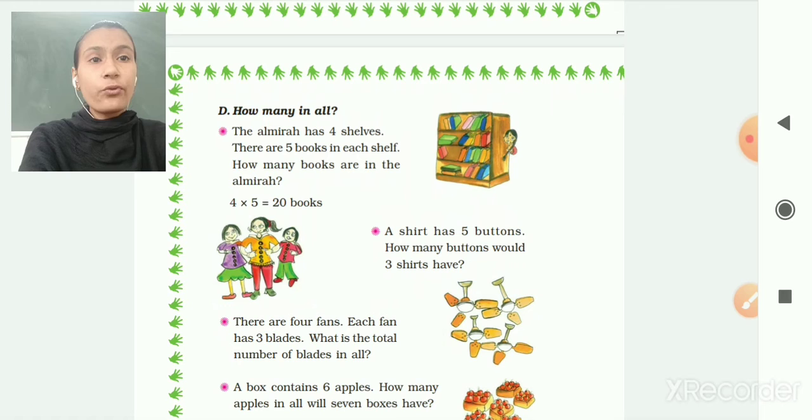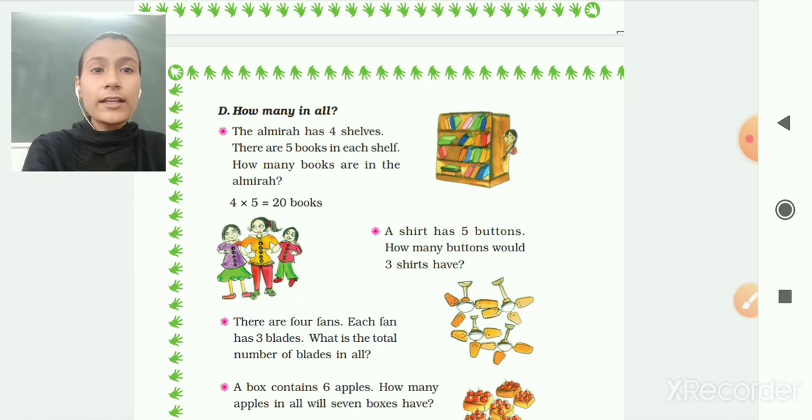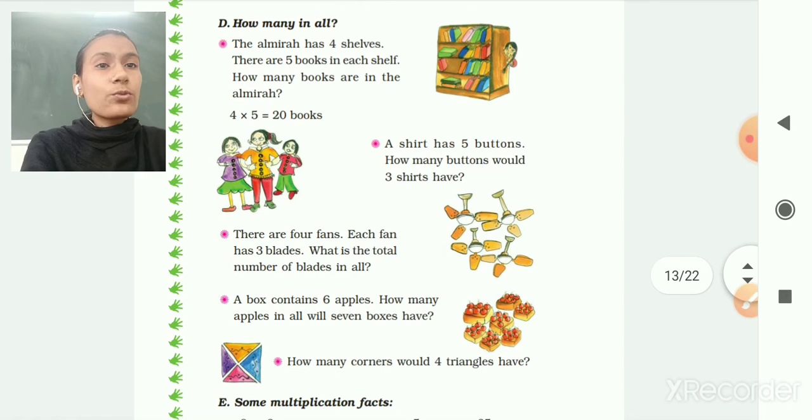You can see here on page number 134, how many in all? The Almari has 4 shelves. There are 5 books in each shelf. So how many books are there in the Almari? So 4 multiply by 5 is equal to 20.